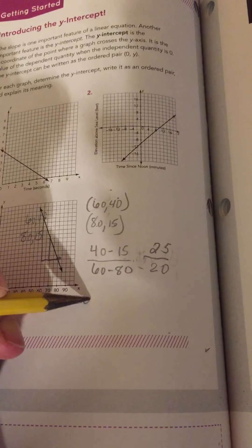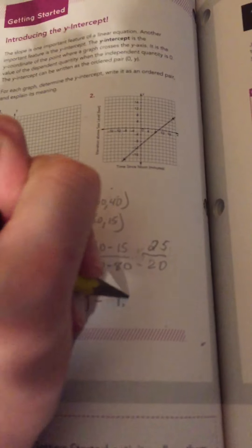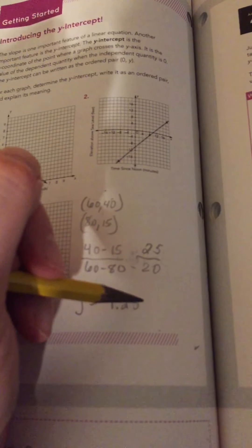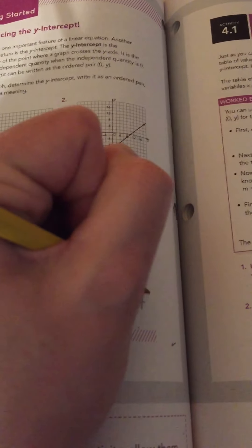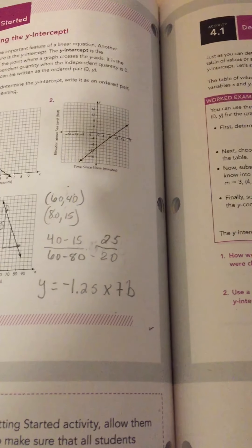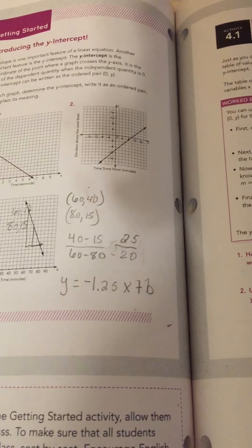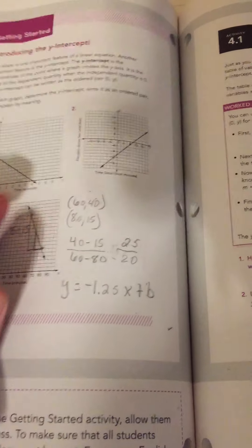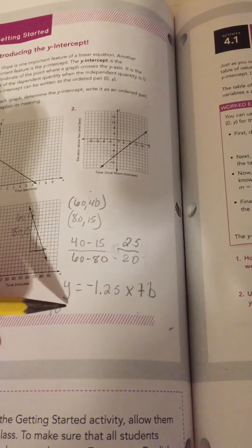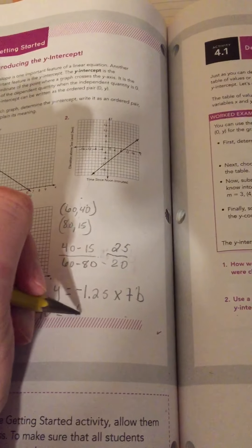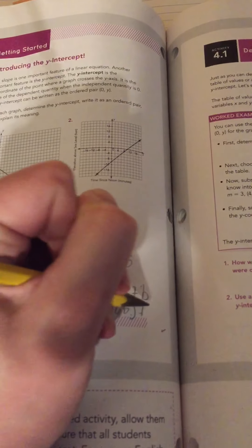So, then I could write the equation y equals negative 1.25 x plus something b. And then I can say, all right, well, if I plug in two of the coordinates that we have into this equation, what is that something that would make this a true math statement? So, I know that I have here a y of 40 and an x of 60, so I could plug those in and say 40 is equal to negative 1.25 times 60 plus what?